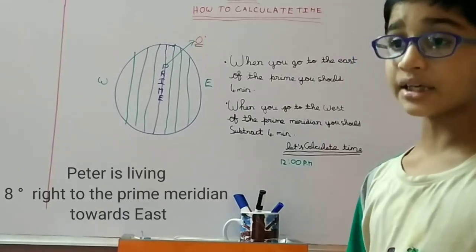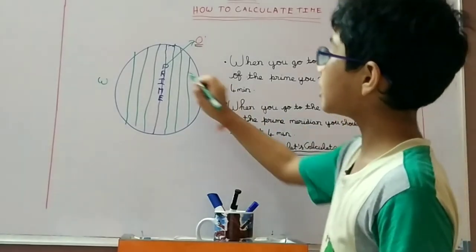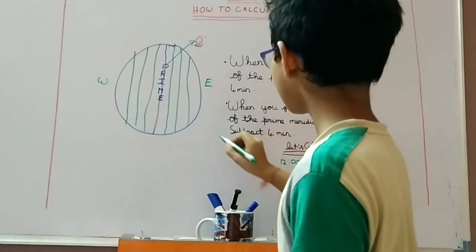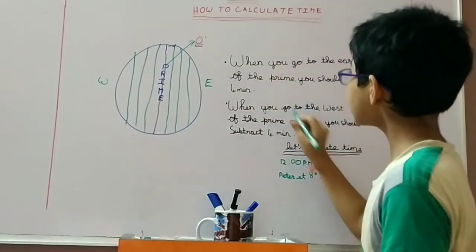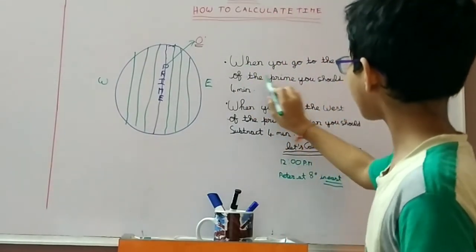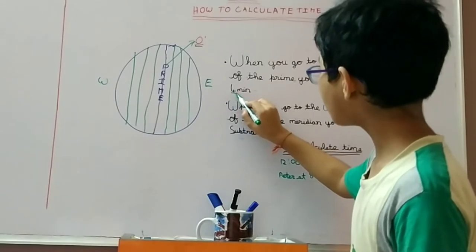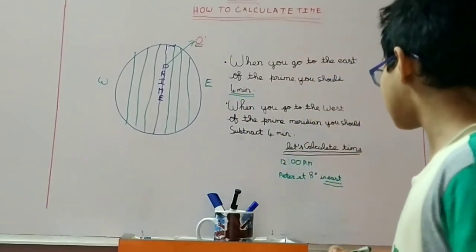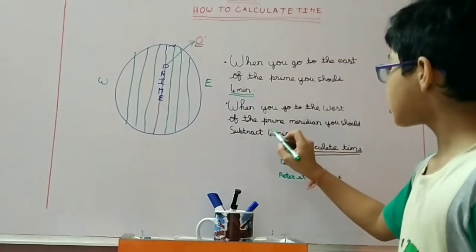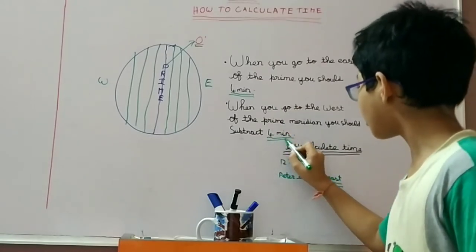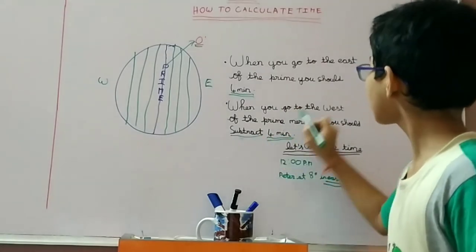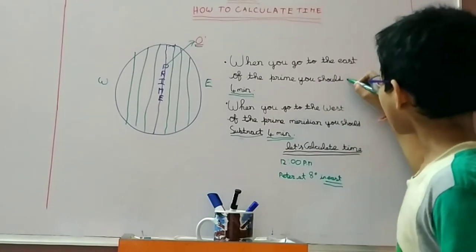You should add four minutes. East leading at eight degrees from the prime meridian of east. When you go to the east of the prime meridian, you should add four minutes. When you go to the west, you should subtract four minutes.